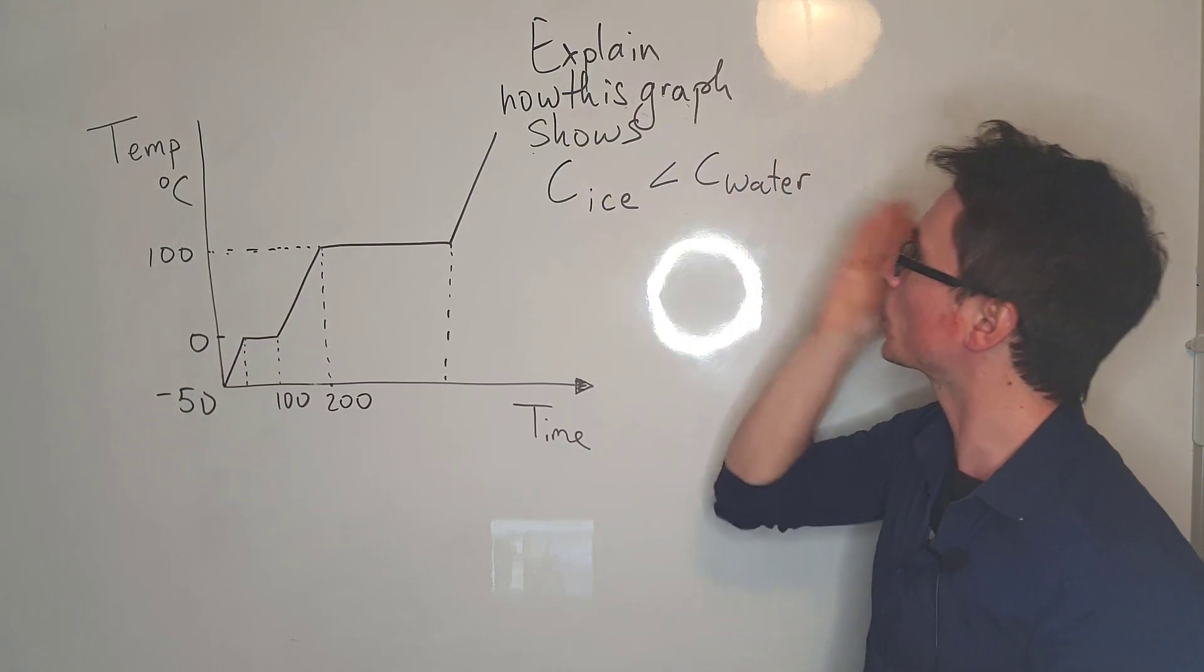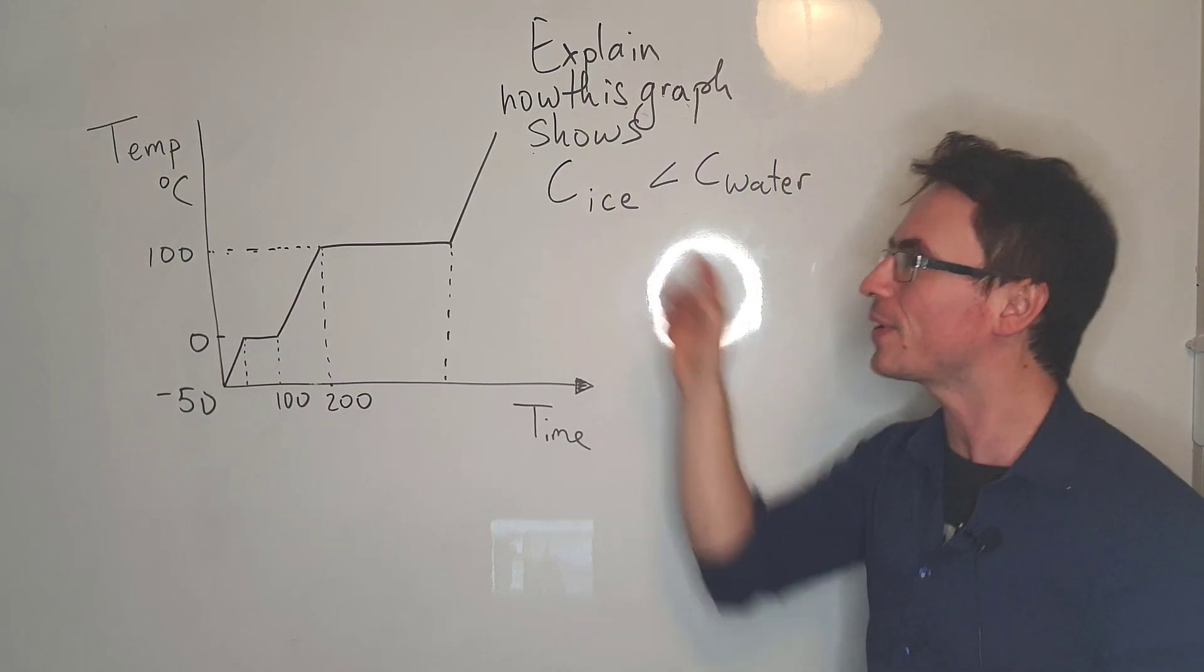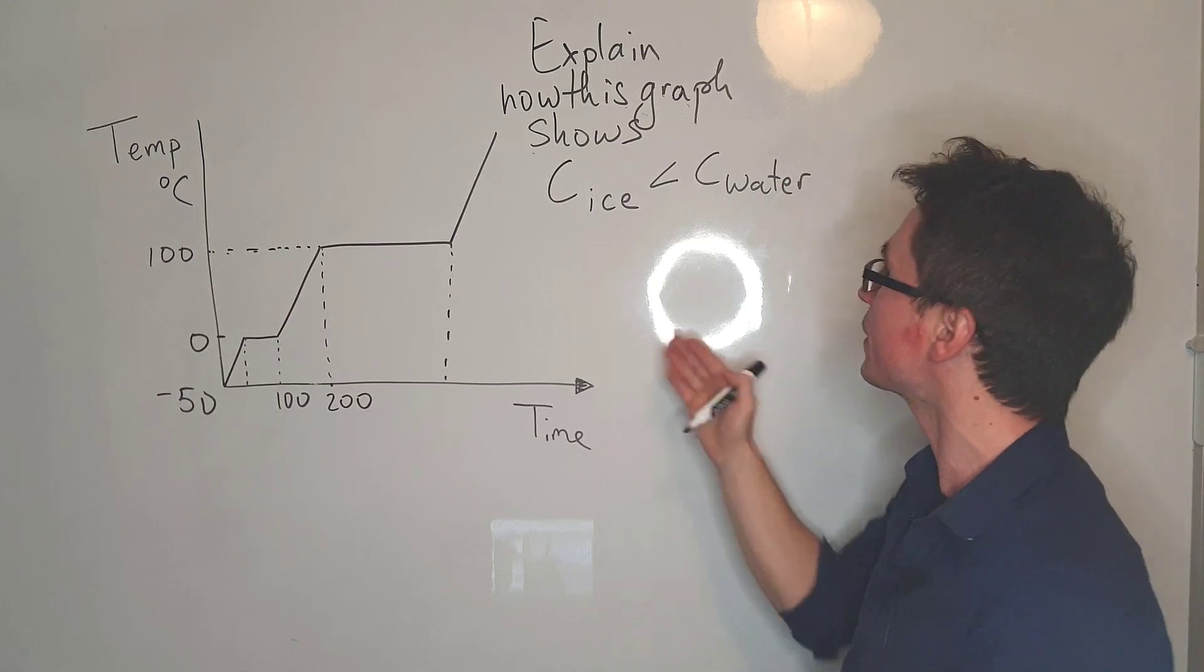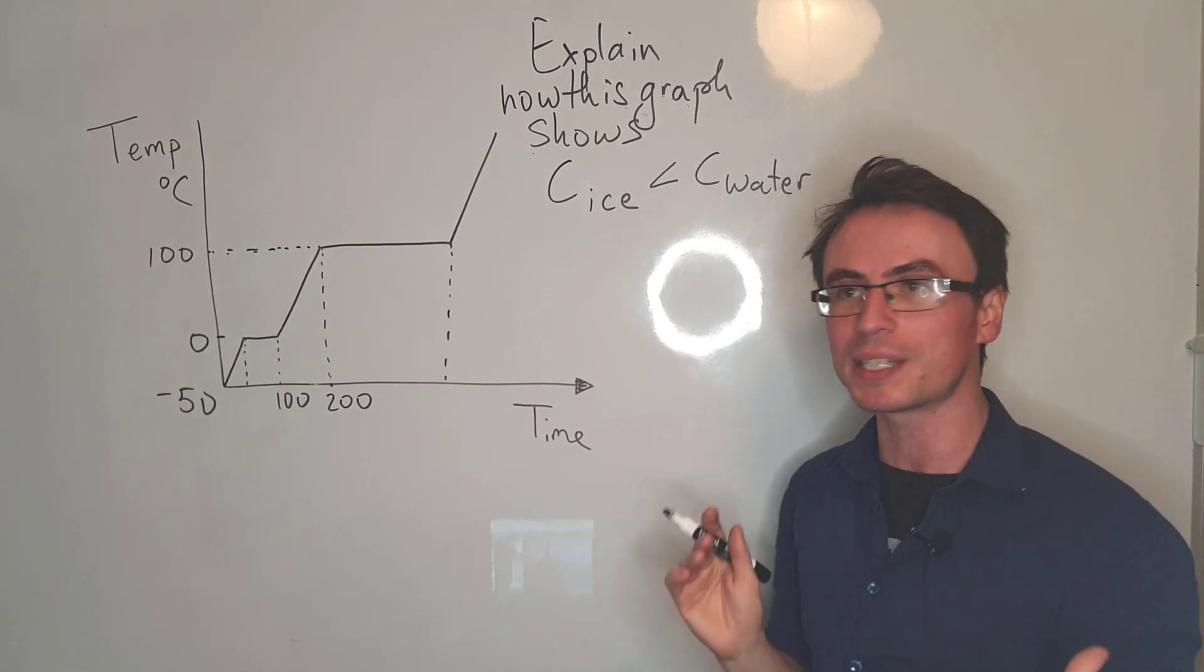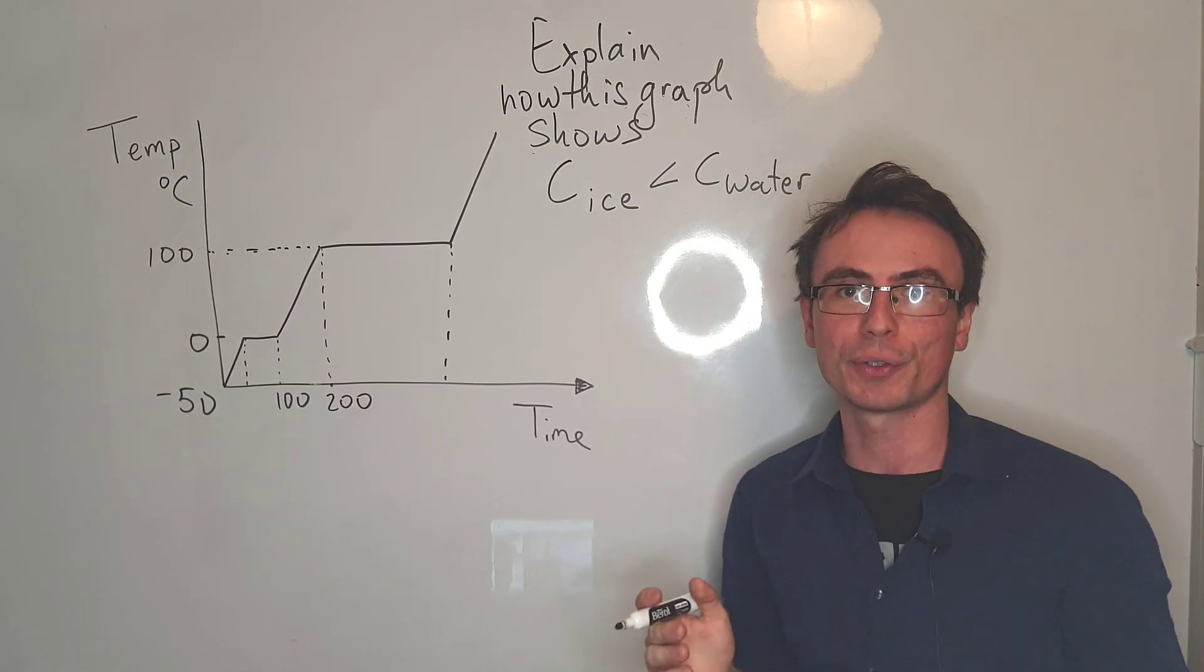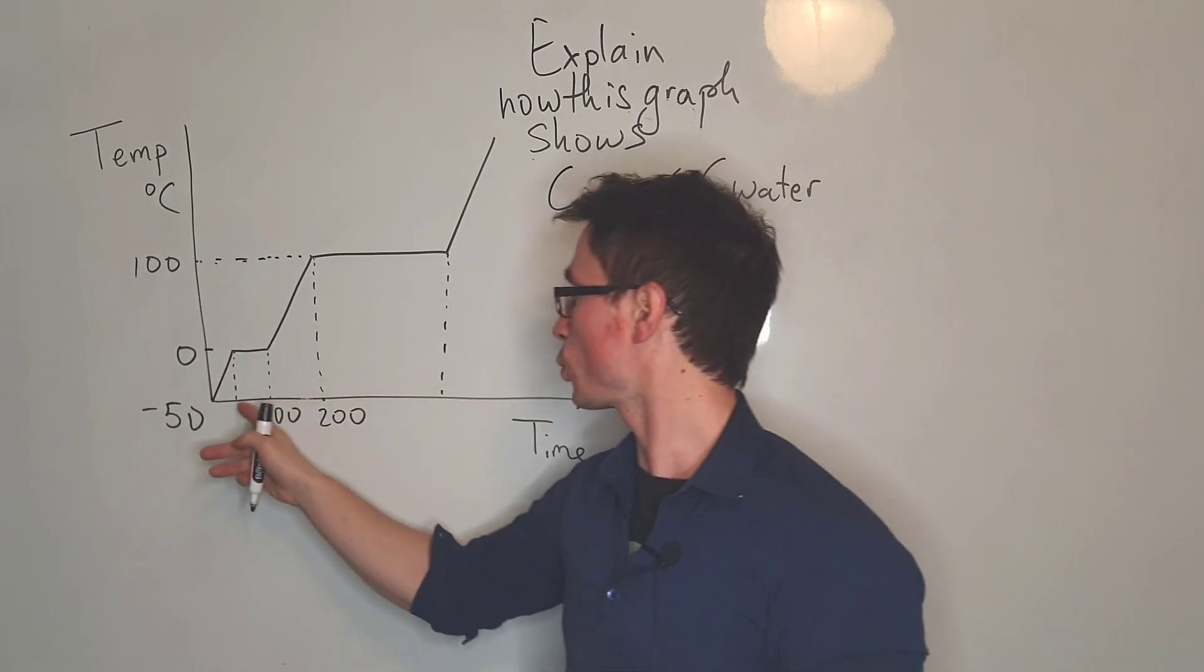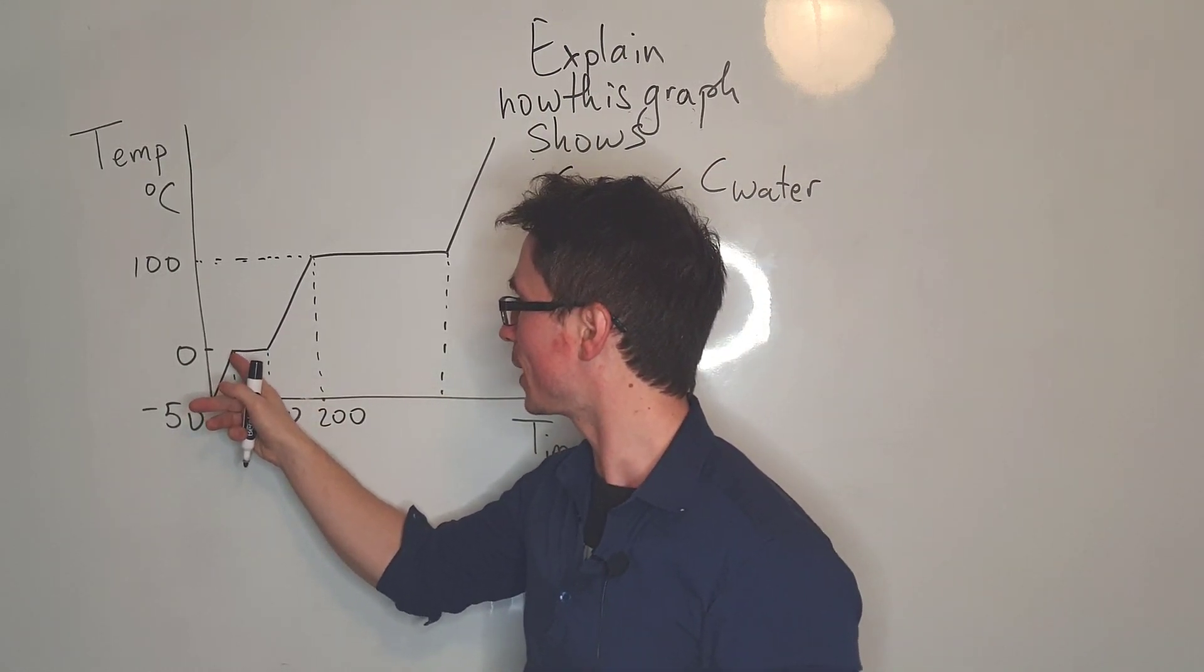to explain how this graph shows that the specific heat capacity of ice is smaller than the specific heat capacity of the water. First of all, the region of the ice is just this one here right before it reaches zero degrees.